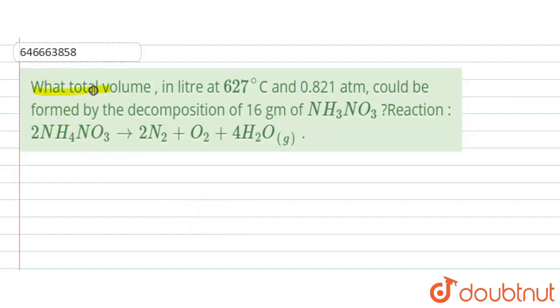So here the question is: what total volume in liter at 627 degree Celsius and 0.821 atmosphere could be formed by the decomposition of 16 grams of NH4NO3? The reaction is given to us.